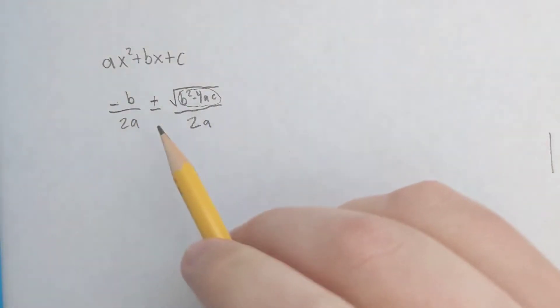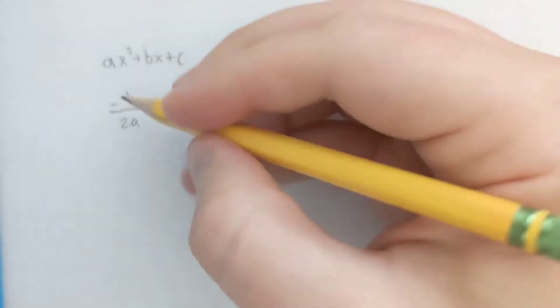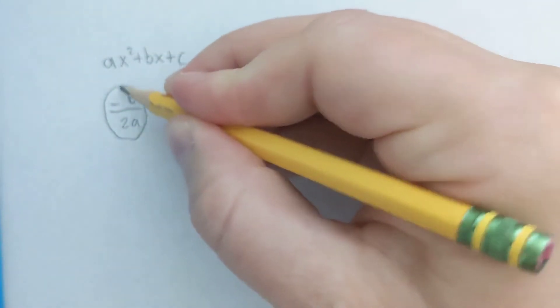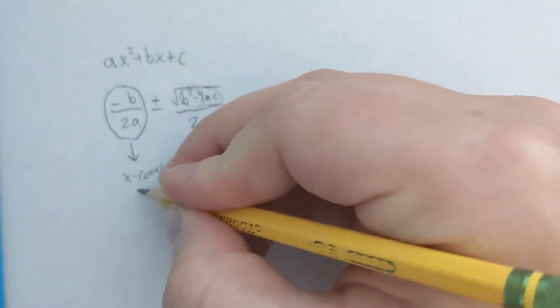So I've just rewritten the quadratic formula, and instead of putting everything over 2a, I've split it up into two parts. Now you might recognize this part right here. This is always the x-coordinate of the vertex.